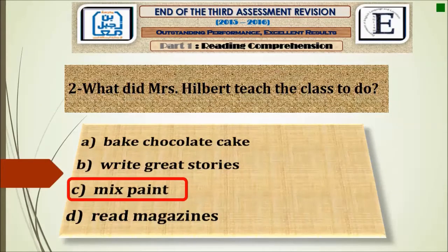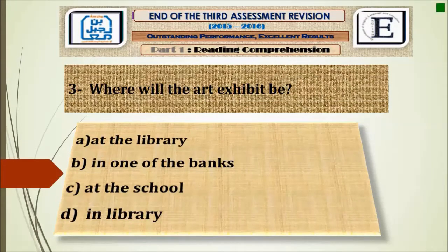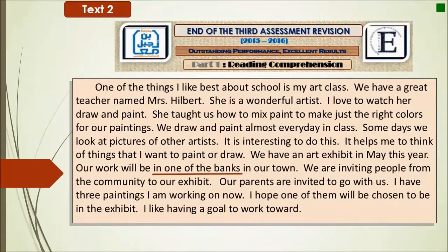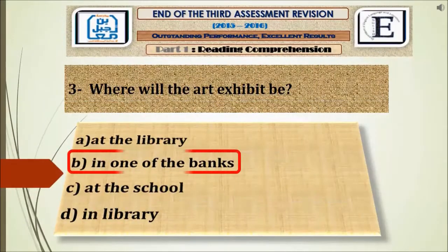The answer is C: mix paint. Let's move to question number three: Where will the art exhibit be — at the library, in one of the banks, at a school, or in a library? Looking at the text: 'Our work will be in one of the banks in our town.' So the answer is B: in one of the banks.